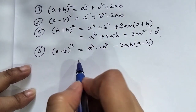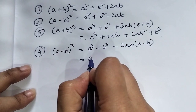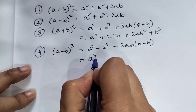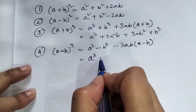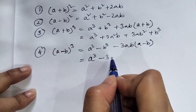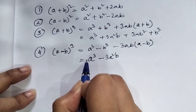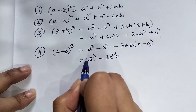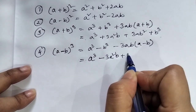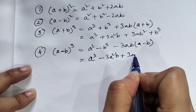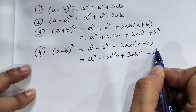Remember this formula. Write it down: a cube minus 3a square b, and here the signs alternate plus or minus. So we get plus 3ab square minus b cube.